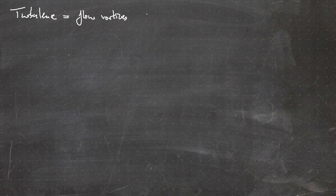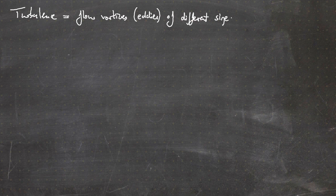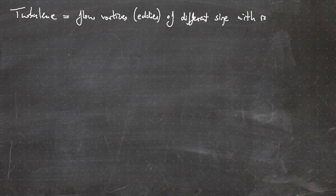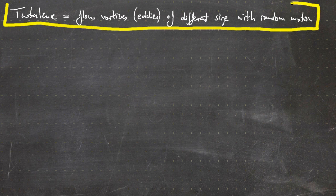Now, what is turbulence? Turbulence can be defined in multiple ways. A very simple definition might be the following: turbulence is or can be understood as flow vortices, also sometimes called eddies, of different size and with random motion. This is a very short and simple definition but it captures the most important or for us relevant properties.